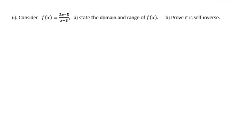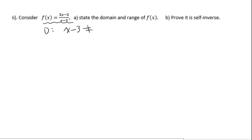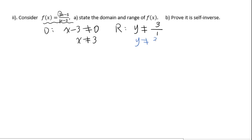Let's go to the second question: state the domain and range of this rational function. For the domain, set the denominator x minus 3 not equal to 0, so x not equal to 3. For the range, take the coefficient of x in the numerator over the coefficient of x in the denominator, which is 3 over 1, so y not equal to 3.